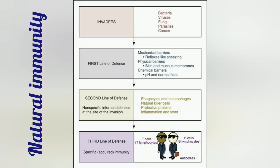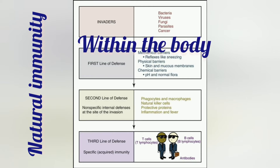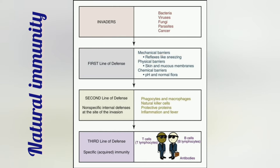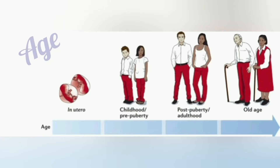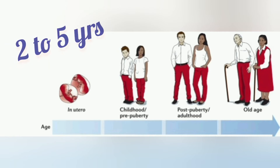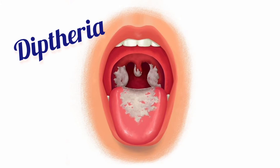Now let's put some light on natural immunity. Natural immunity is attained within the body. The resistance to disease is possessed by an individual due to the following factors. Number one is age. The majority of children in the age group between two to five years are susceptible to diphtheria disease, whereas adults are immune to it.